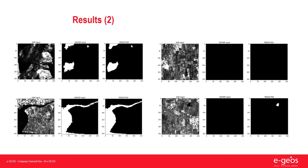Here are some further results which confirm what was described. The network is also able to recognize when there is no water in the image, as visible in the first row, second column. In the second row, second column, we can also see how the network is actually better sometimes than the ground truth, having recognized water also where the ground truth does not indicate it.